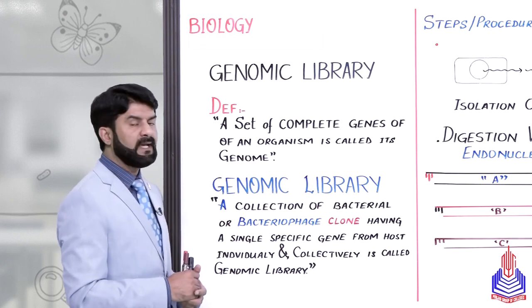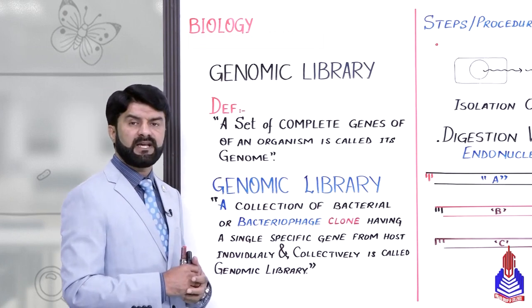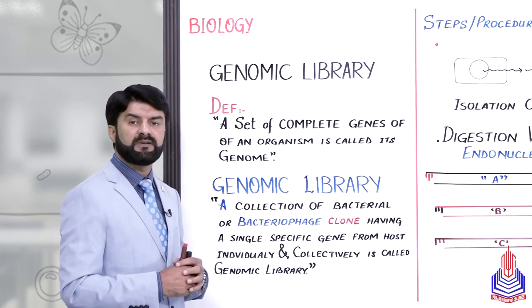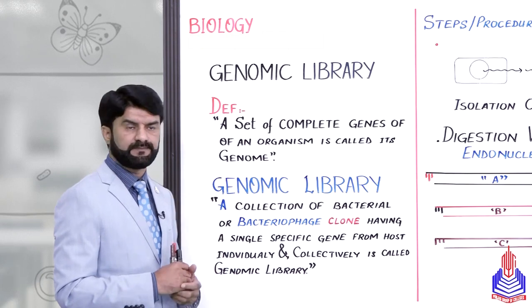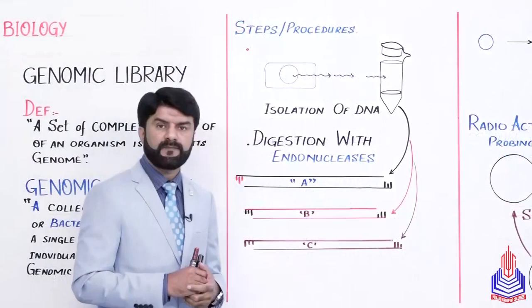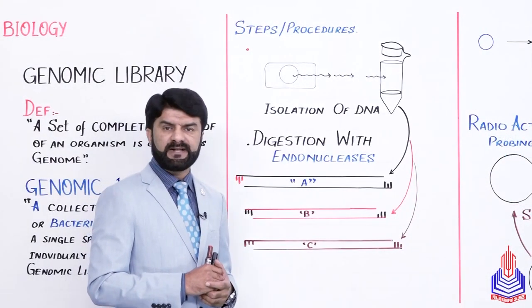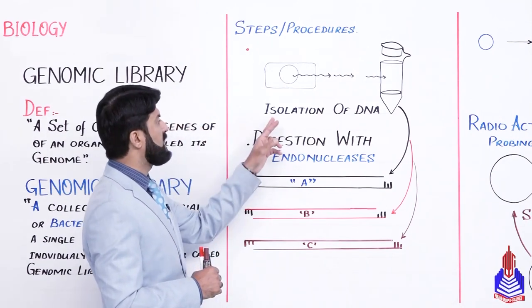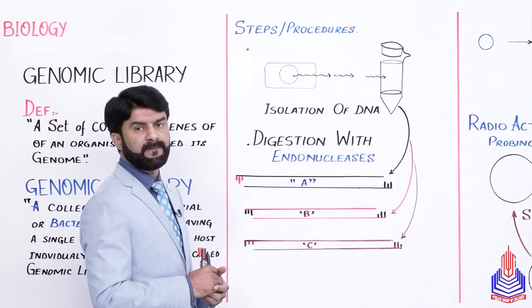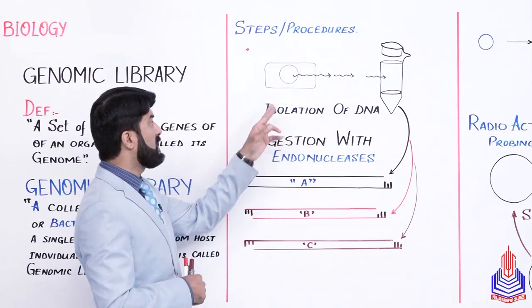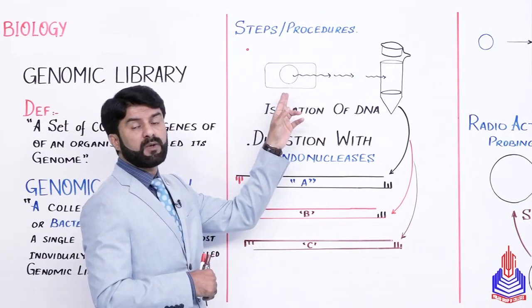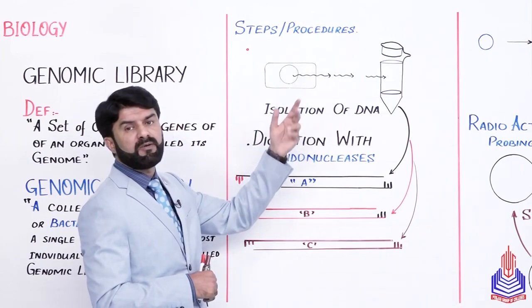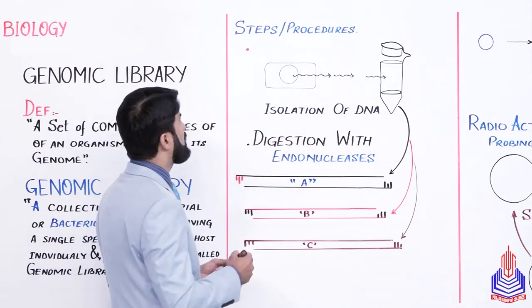اب ہم دیکھتے ہیں کہ اگر ہم genomic library بنانا چاہتے ہیں کسی ایک organism کی تو اس کے لیے کیا کیا steps کرنے پڑیں گے. So let's move to the next part of the board. تو سب سے جو پہلا step ہے وہ کیا ہے — isolation of DNA. آپ لوگوں کے پاس یہ کوئی eukaryotic cell بھی ہو سکتا ہے اور ممکن ہے یہاں پہ کوئی bacterial cell ہو، تو وہ bacterial cell کو بھی یہاں draw کیا جا سکتا ہے.